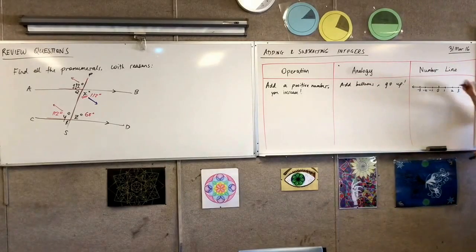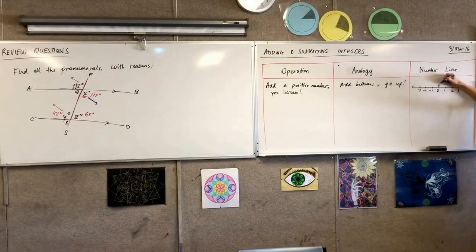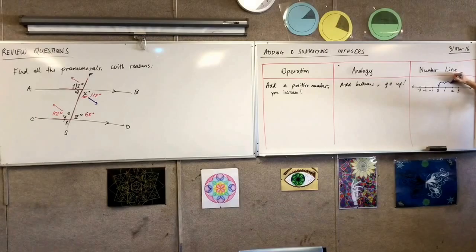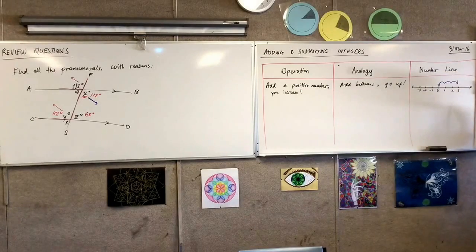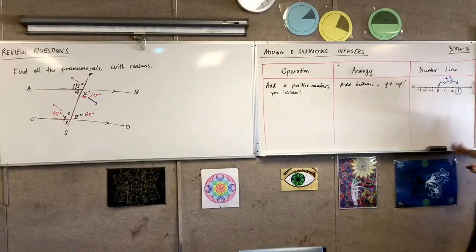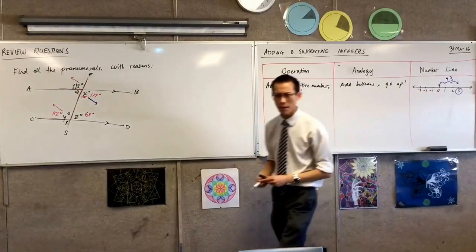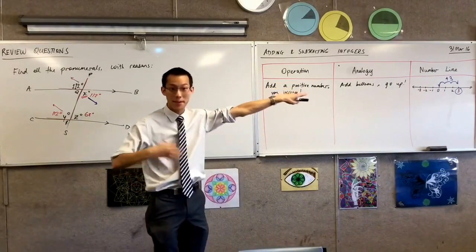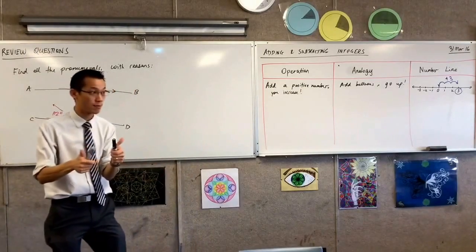If I added three, I start here, and then I go one, two, three. Does that make sense? I'm adding a positive number, and therefore, I increase. I go to the right. Does that make sense? Going to the right means I'm increasing. I'm getting bigger. So far, so good?